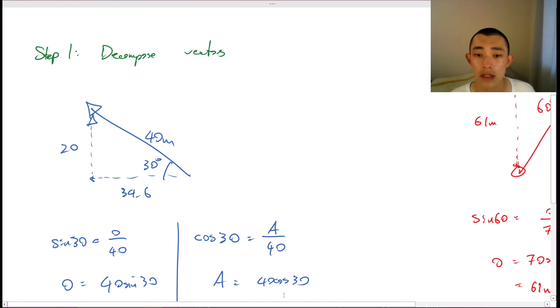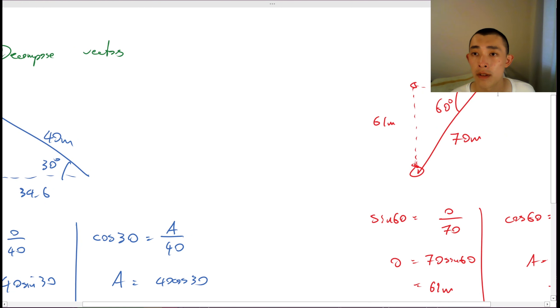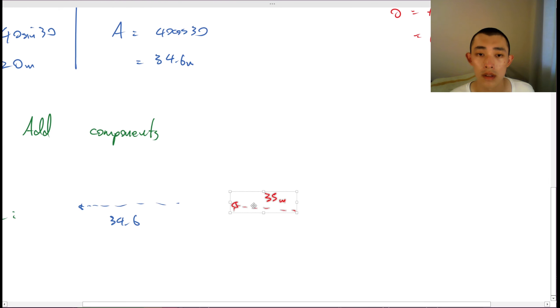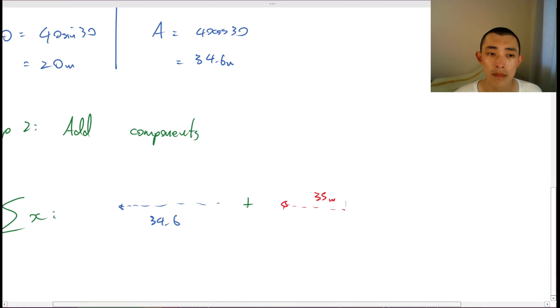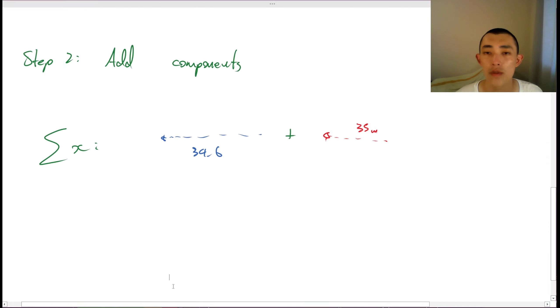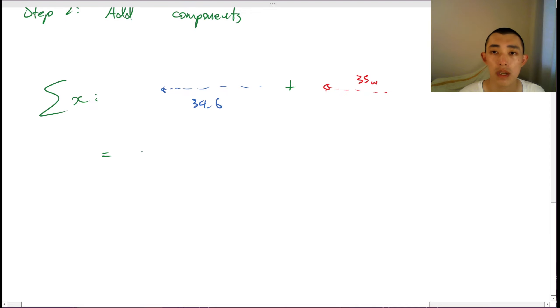This is just normal vector addition. What's this going to be? It's going to be 34.5 plus 35 is going to be 69.6 meters towards the right there.